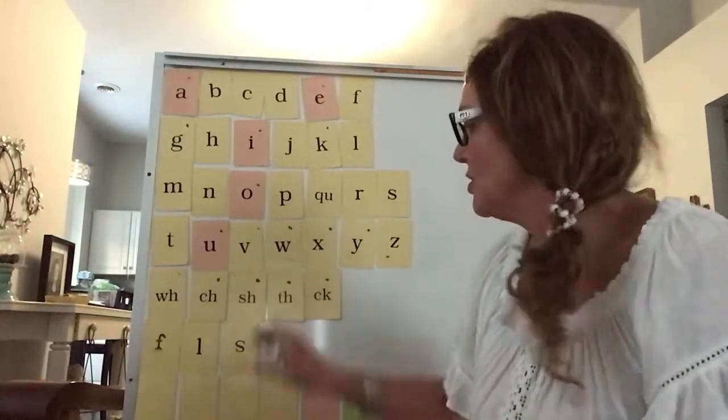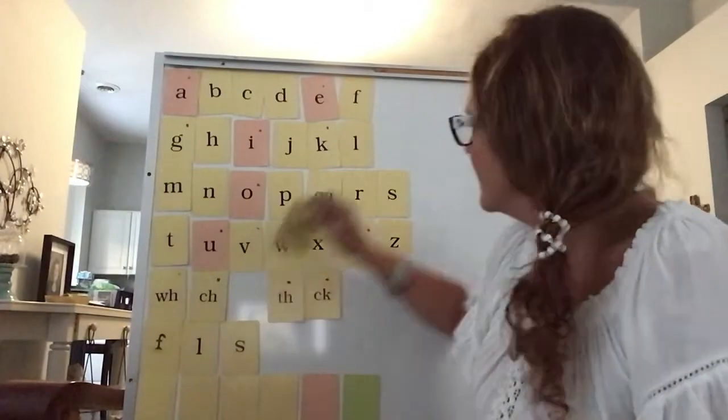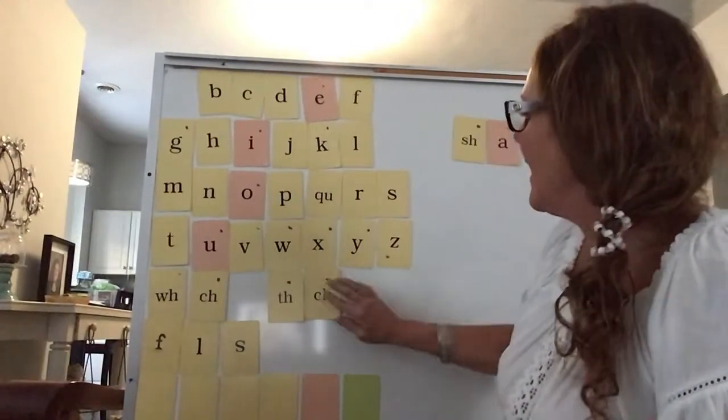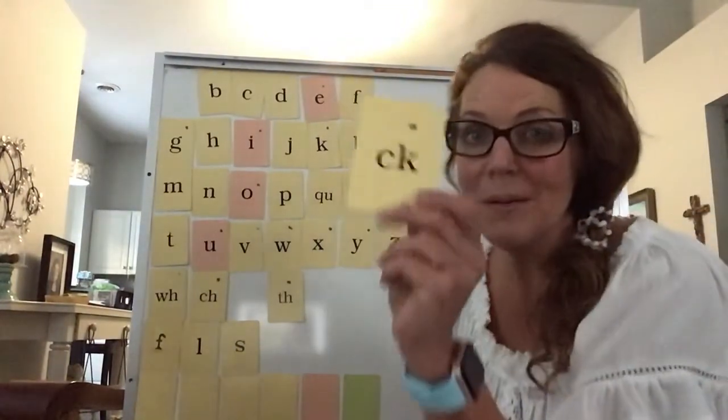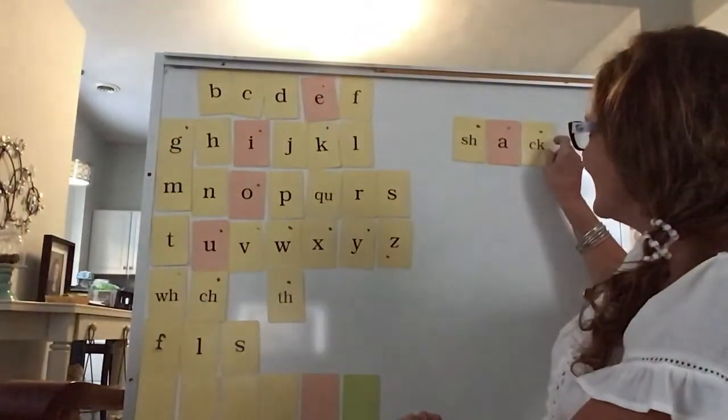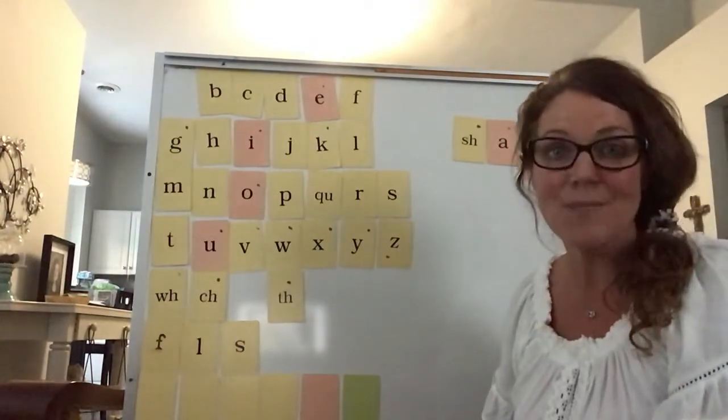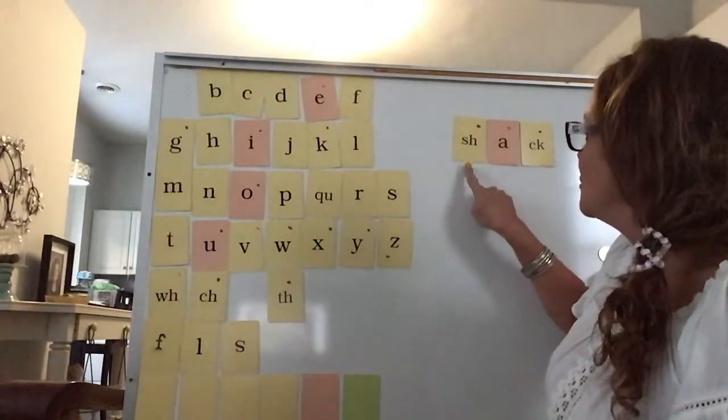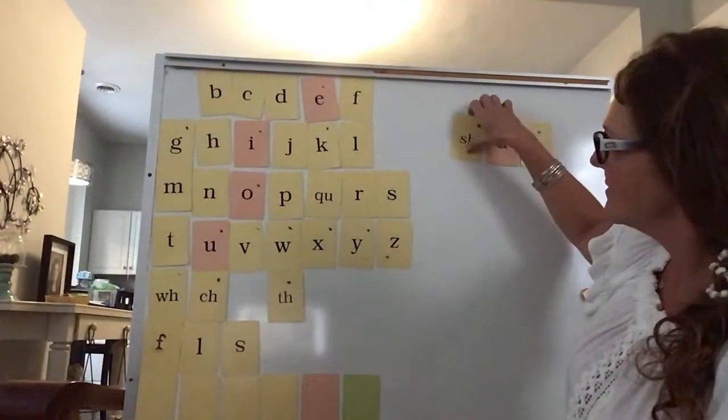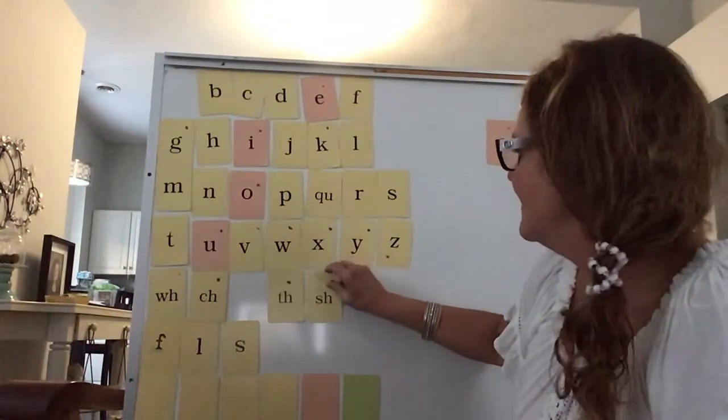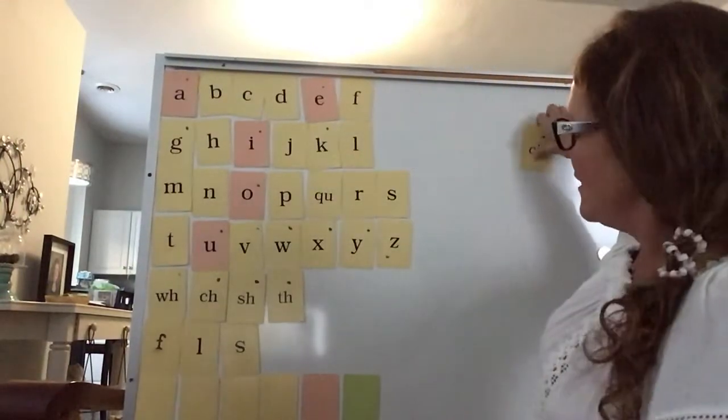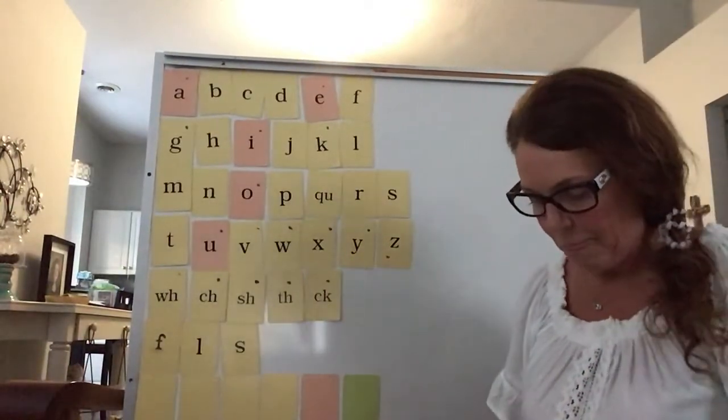Let's build the word SH. Pull the tiles over. SH, A, CK. Oh, here we go again. Remember I told you this one always goes at the end of a word? And there we have it. Shack. Let's tap it out. SH, A, CK, shack. Clear your deck. SH goes there, A goes back over there, and CK.